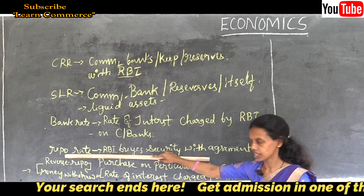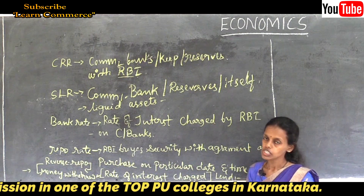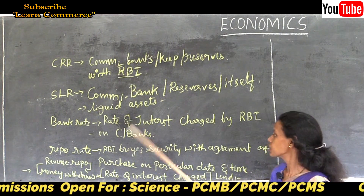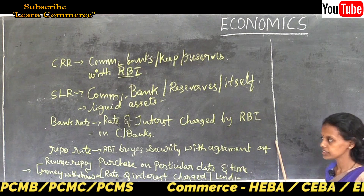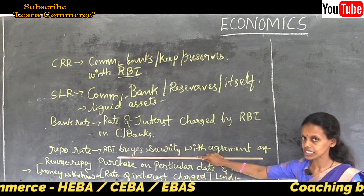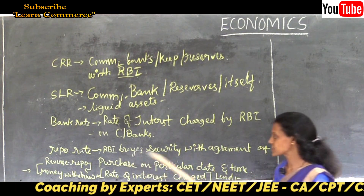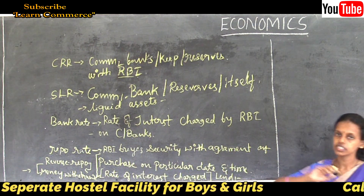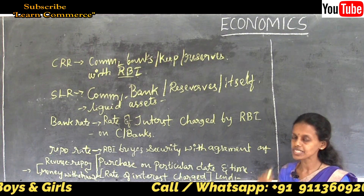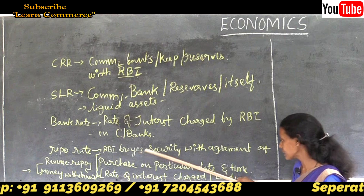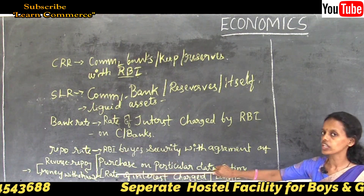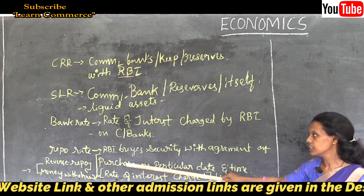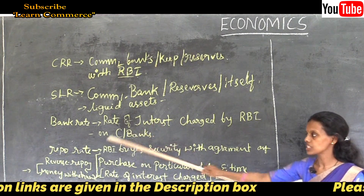Next is repo rate. There are repo rate and reverse repo rate. Repo rate is the rate of interest charged while lending money with an agreement. RBI buys securities with an agreement of repurchase on a particular date and time — such as debentures or treasury bills. The rate of interest charged by RBI on lending through buying such securities is called the repo rate.